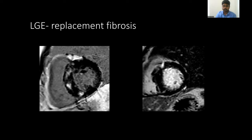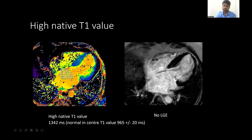Myocardial fibrosis happens in case of HCM. It is seen as late gadolinium enhancement. The usual pattern is mid-myocardial patchy enhancement and RV insertion point enhancement. Other patterns of LGE should raise the suspicion of an alternate diagnosis. Even in cases with absent LGE enhancement, like in this patient with a septal form, the T1 values can be elevated, indicating early fibrosis.